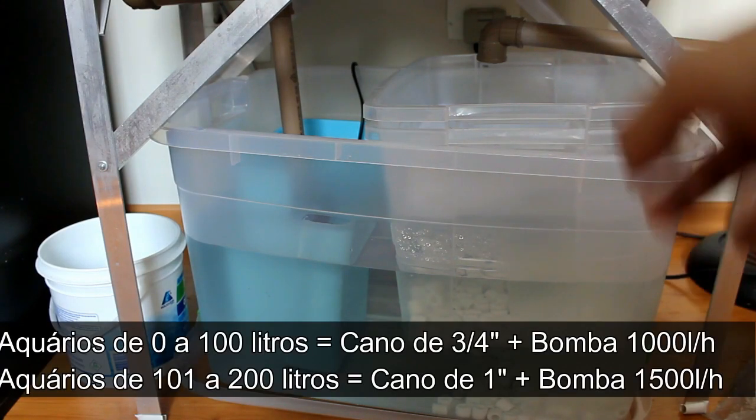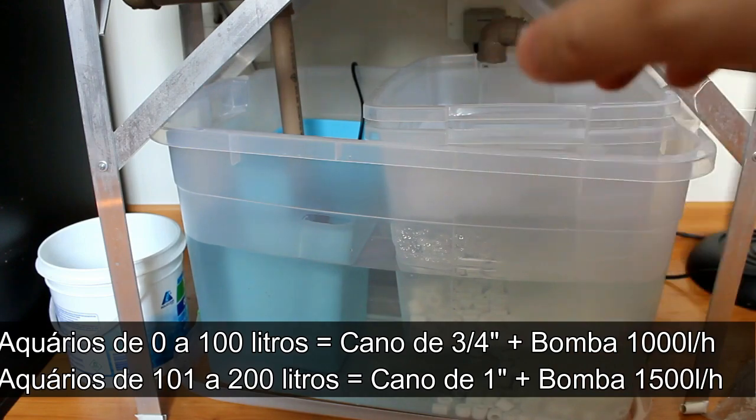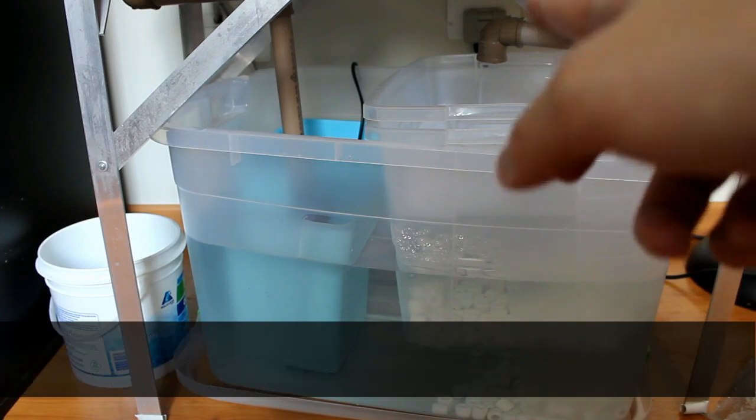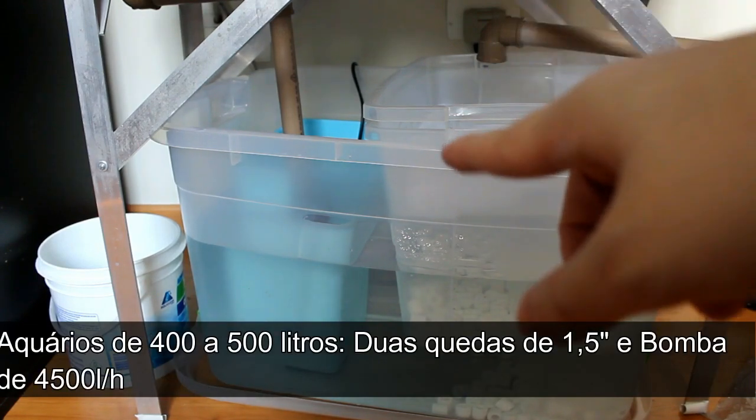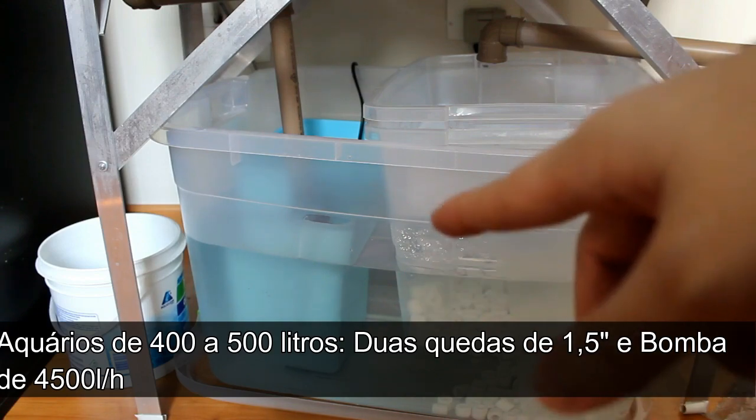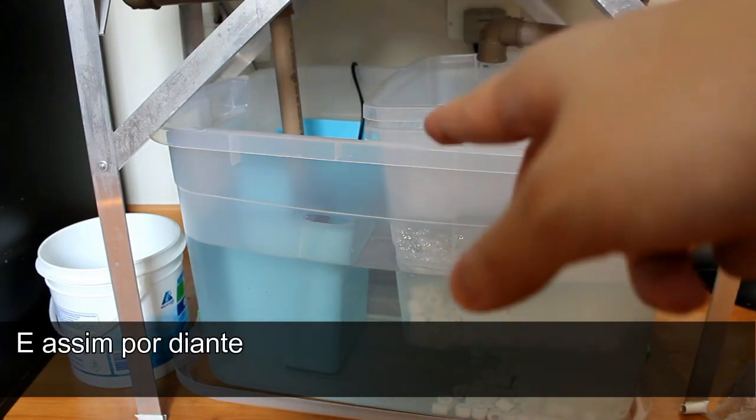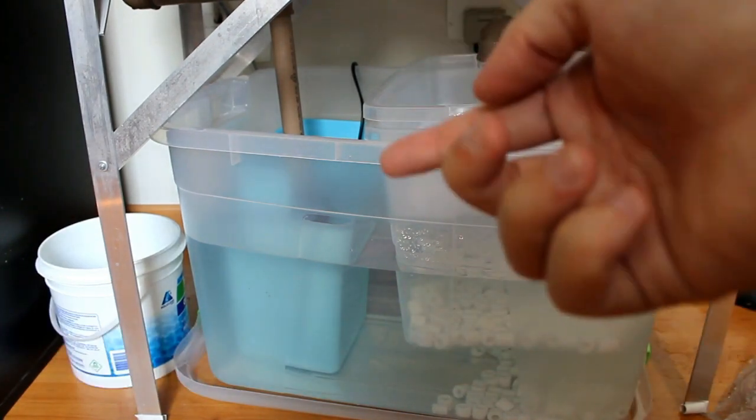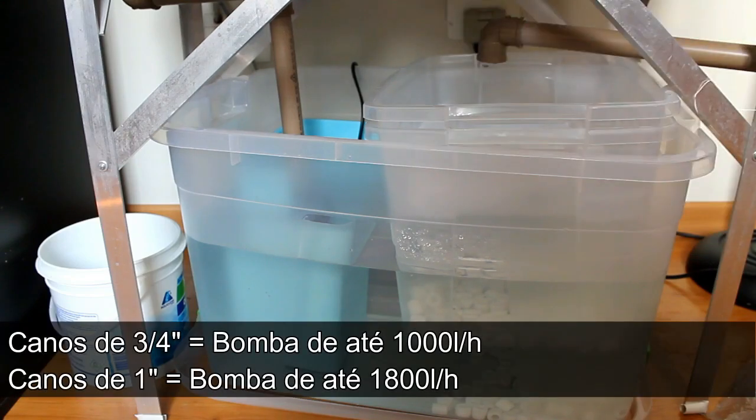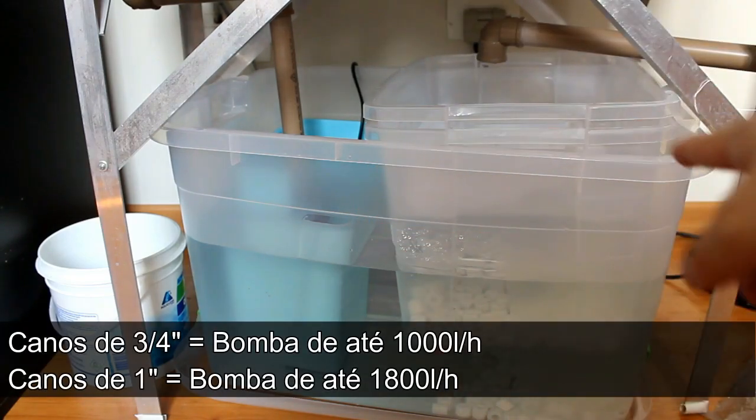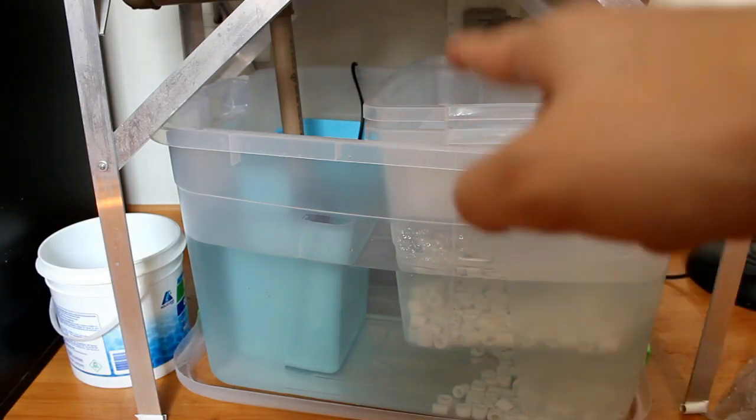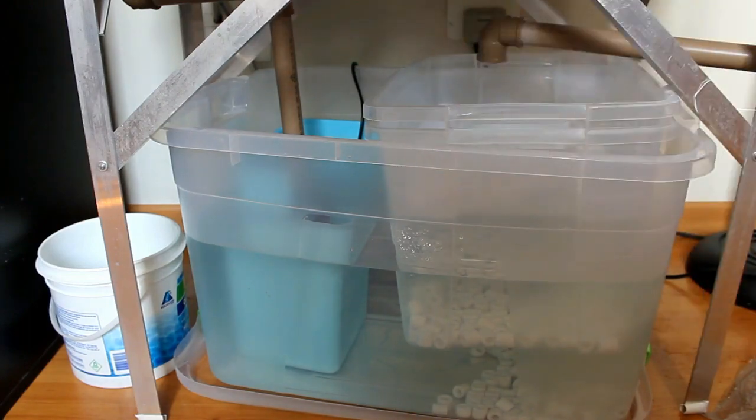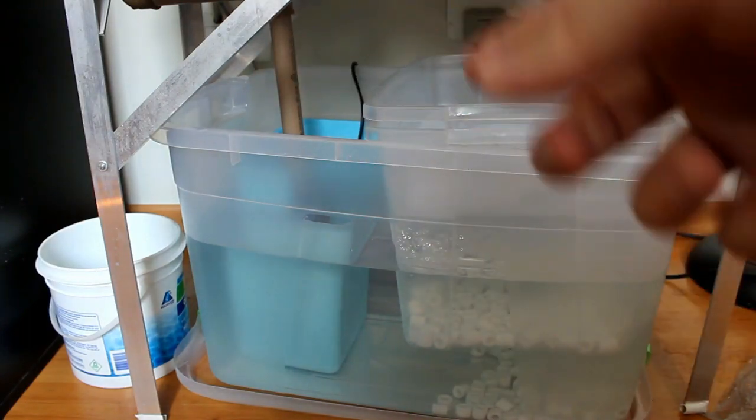Agora como escolher a bomba de vocês, pessoal? A bomba de vocês tem que ser no máximo a vazão máxima do overflow. No caso do meu overflow, que é 1.200 litros hora, eu teria que comprar uma bomba de até 1.000 litros hora para não ter problema. Porém, o que eu fiz? Eu comprei uma bomba de 1.300 litros hora a 1.500 litros hora. Então, mesmo o overflow, no máximo, a bomba acaba jogando água mais rápido para o aquário do que o overflow joga para o sump.